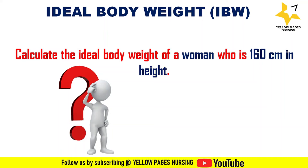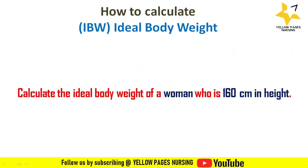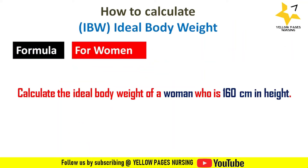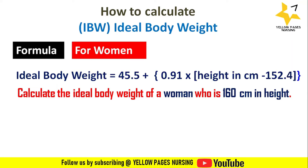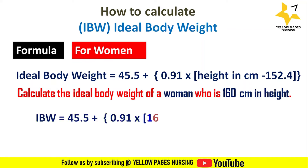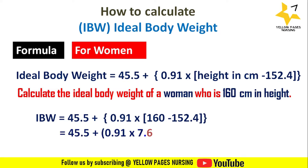The next example: calculate the ideal body weight of a woman who is 160 centimeters in height. The formula for women is: IBW = 45.5 + 0.91 × (height in centimeters − 152.4). Applying the example: IBW = 45.5 + 0.91 × (160 − 152.4), which gives the answer 52.4. So the ideal body weight is 52.4 kilograms.